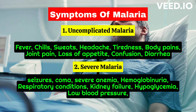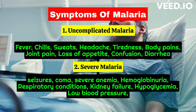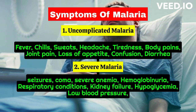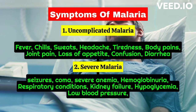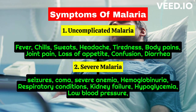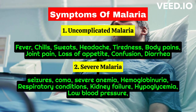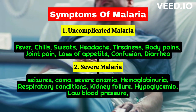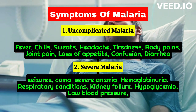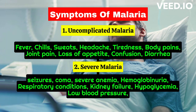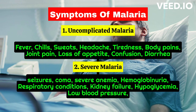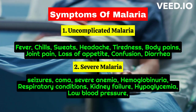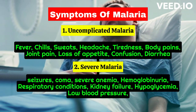Additional symptoms include diarrhea. Symptoms of severe malaria include cerebral malaria, seizures, coma, and other neurological abnormalities; severe anemia; hemoglobinuria; abnormalities in the blood coagulation process; respiratory conditions such as ARDS; kidney failure; hypoglycemia; low blood pressure; and metabolic acidosis. Immediate treatment is essential for severe malaria.